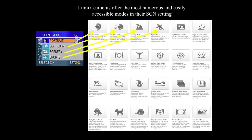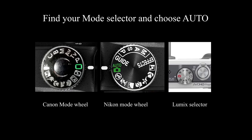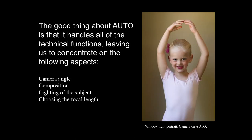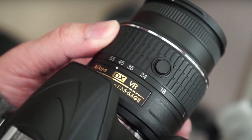Lumix cameras are really terrific. Expensive top-end cameras have the fewest modes and are most difficult to use. Many professional photographers carry a simple point-and-shoot camera for quick access to simple shooting modes. Find your mode selector and choose Auto, because that's where we're going to start. The Canon mode wheel is on the left, Nikon is in the middle, and Lumix is on the right. Typically, DSLR companies have gone to a green icon for the Auto function. The good thing about Auto is that it handles all of the technical functions, leaving us to concentrate on camera angle, composition, lighting of the subject, and choosing the focal length — in other words, do we want to zoom in or zoom out, and how do we crop the image?